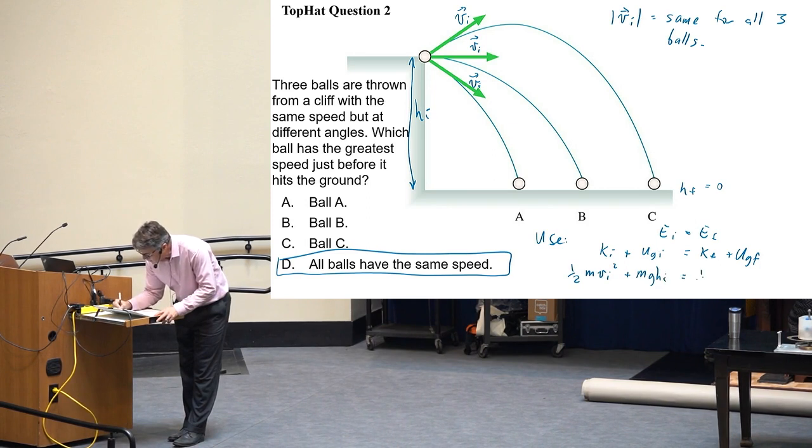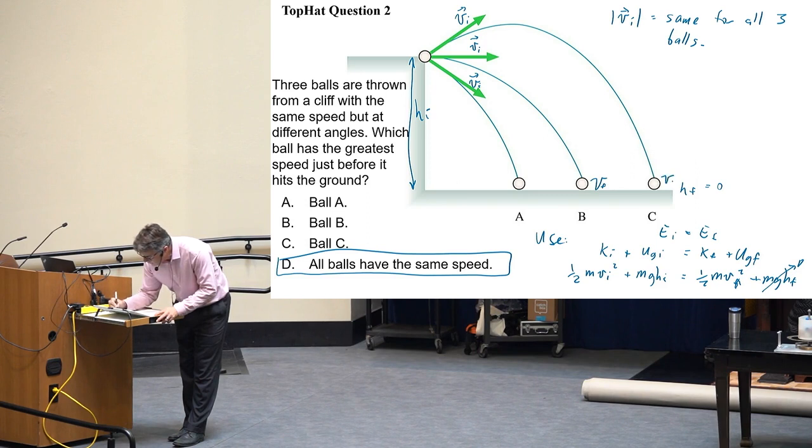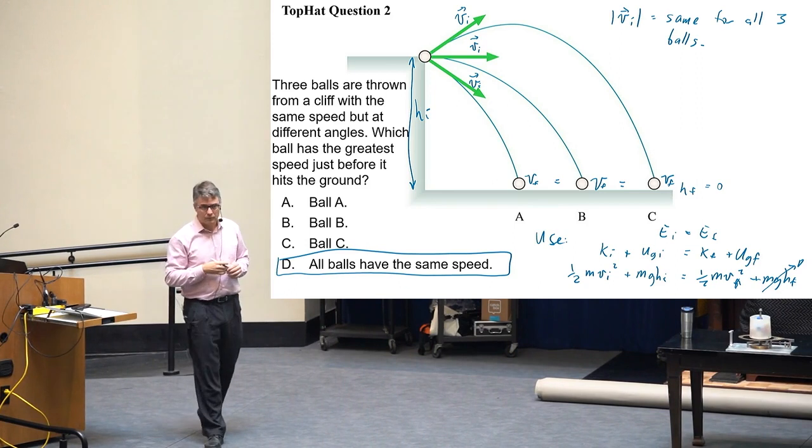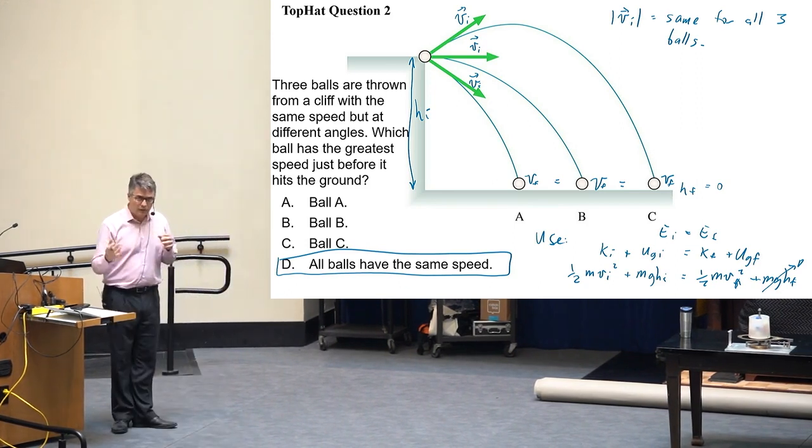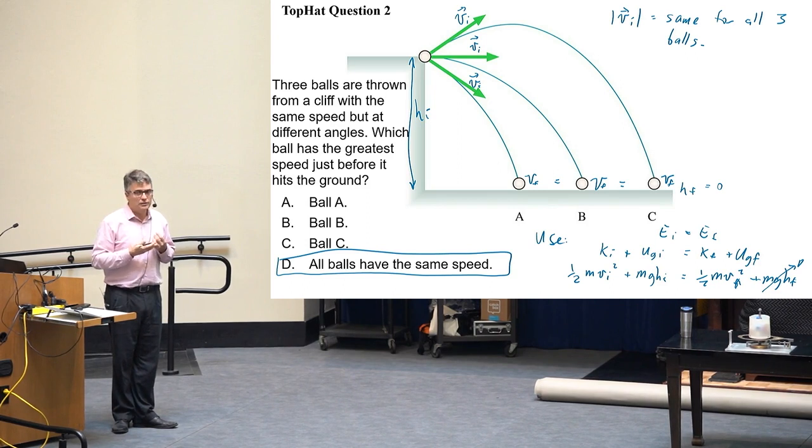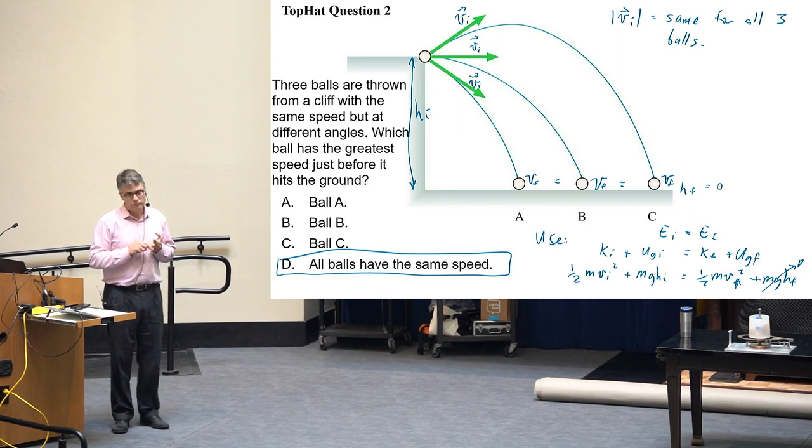So you've got 1/2 mass times V initial squared plus mg H initial, which I've drawn there, equals 1/2 m V final squared plus mg H final, which this one will go to zero. But in all these cases, just before it hits the ground, you've got V final. They should all be the same because it's the same exact equation for all three of them. So the direction doesn't matter. Free fall is a situation where there's no external work being done on the ball as it travels, so you can use conservation of energy. I guess there is external work being done by air resistance, but we've neglected that.